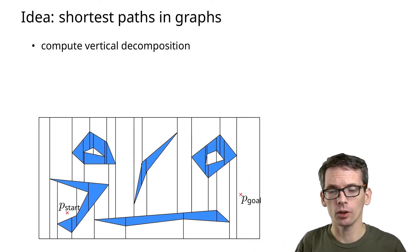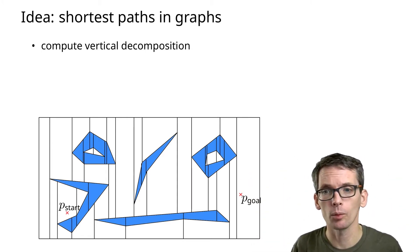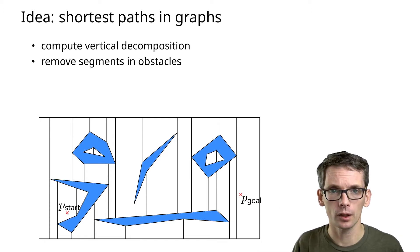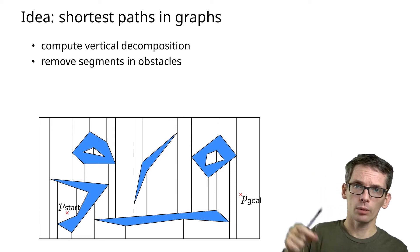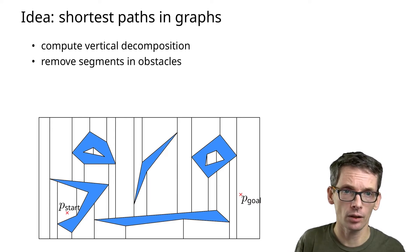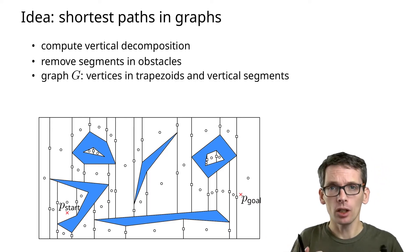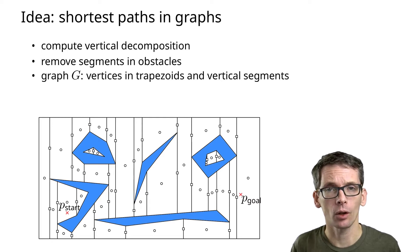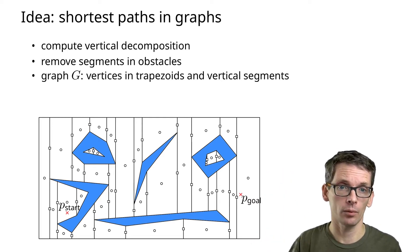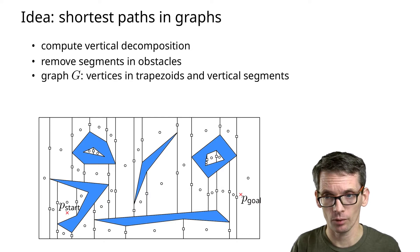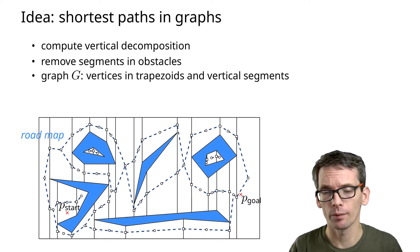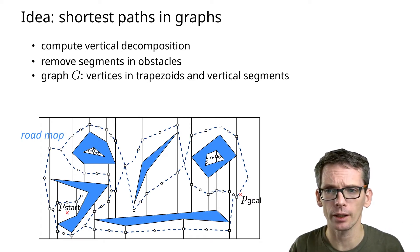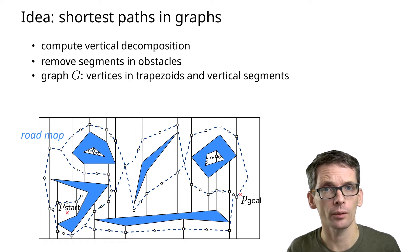We compute the vertical decomposition of the obstacle segments and remove everything that is inside the obstacles — now we have the vertical decomposition of the free space. We still need a graph: we add one vertex in every face, simply in the middle of the face, and additionally a vertex on each vertical extension, in the middle of each vertical extension. Then we connect every face with the vertices on its vertical extensions, and that gives us our graph.